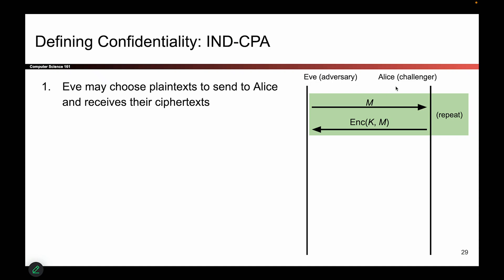Eve winning means the scheme is not secure; Alice winning means the scheme is secure. Here's how the game works. The very first step of the game is giving Eve the ability to use her extra power. Eve has the power to send any message M to Alice, and Alice will faithfully take the key, encrypt the message, and send the ciphertext back to Eve. She can do this as many times as she wants. So before the game really begins, we allow Eve to exercise her power — the intuition being that Eve might try to use this to learn something about the scheme, perhaps leaking information about the key or giving her a clue as to what she should be looking for.